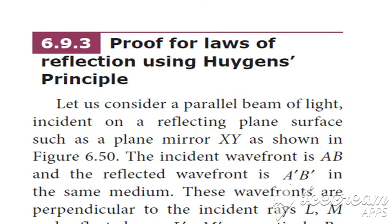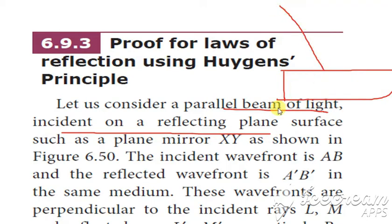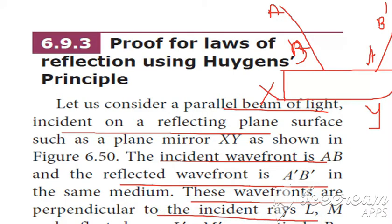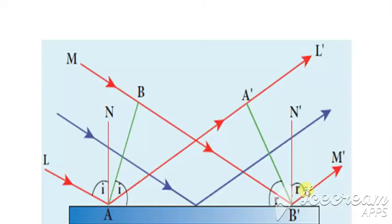We are going to prove the law of reflection using Huygens' principle. Consider a parallel beam of light incident on a reflecting surface — the plane mirror XY. The incident wavefront is AB and the reflected wavefront is A'B'. These wavefronts are perpendicular to the incident rays L and M. The incident rays are AB and the reflected rays are A'B'.